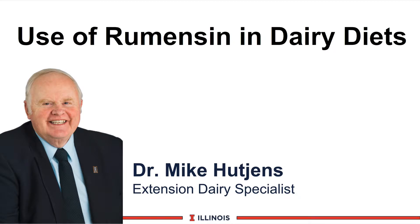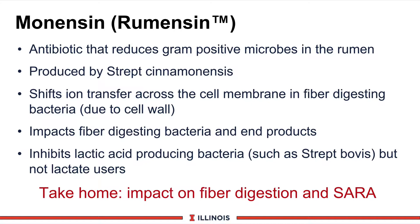Hi, I'm Mike Hutchins, Extension Dairy Specialist at the University of Illinois. This module will discuss the use of rumensin or monensin in dairy rations. Monensin is an antibiotic that reduces gram-positive microbes in the rumen — in other words, it shifts the rumen population. Another name for monensin is rumensin, which is produced by Elanco or Eli Lilly.